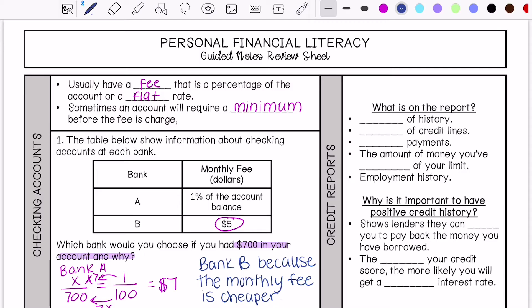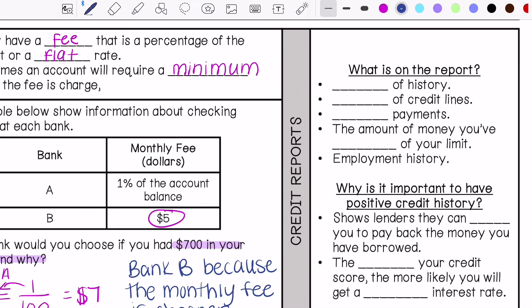Credit reports are talking about your number of credit lines, so number of loans you have, number of credit cards you have. If you have any late payments, are you paying your credit cards and your loan payments on time? The amount of money you have spent of your limit. So on a credit card for example, you could have a limit of $10,000 on one credit card. Your credit report will say how much of that $10,000 you're spending and your payment history.